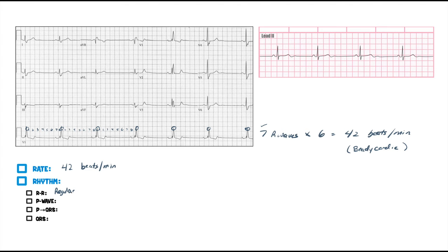P wave — what do we determine? We have to look at lead II. In lead II, it has to be an upright P wave. It is. We also have to go to AVR and find an inverted P wave. If it's upright in lead II and inverted in AVR, that means that this is sinus.